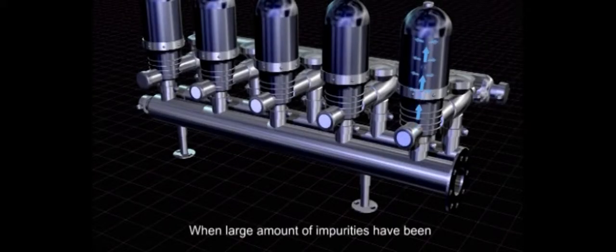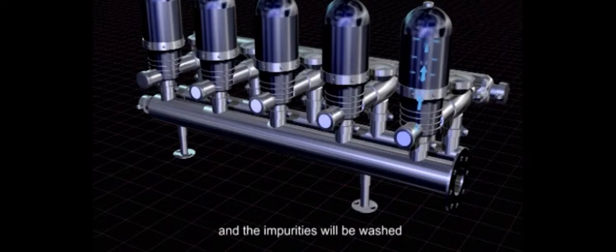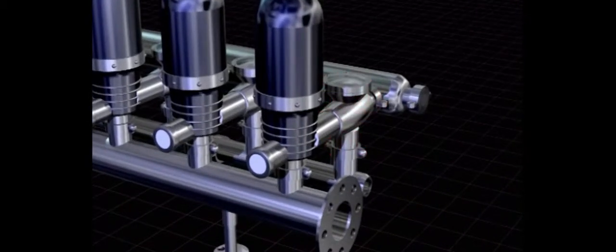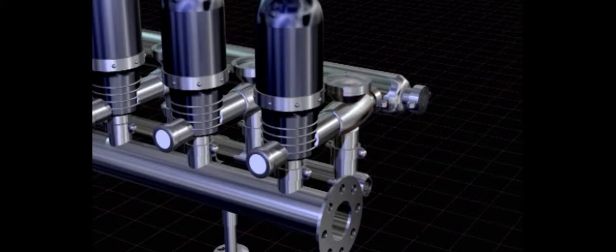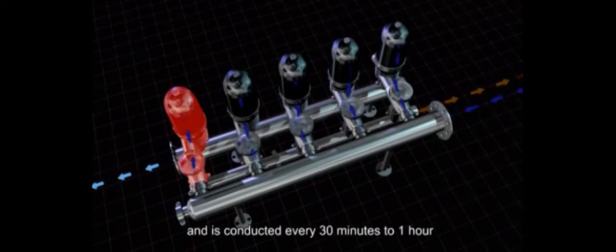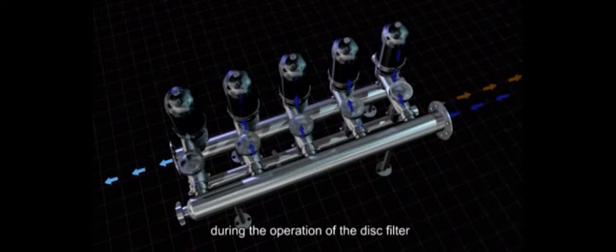When large amounts of impurities have been accumulated on the filtration element, the water flow direction will be changed and the impurities will be washed away by the filtrate. This process is called backwash and is conducted every 30 minutes to 1 hour during the operation of the disc filter.